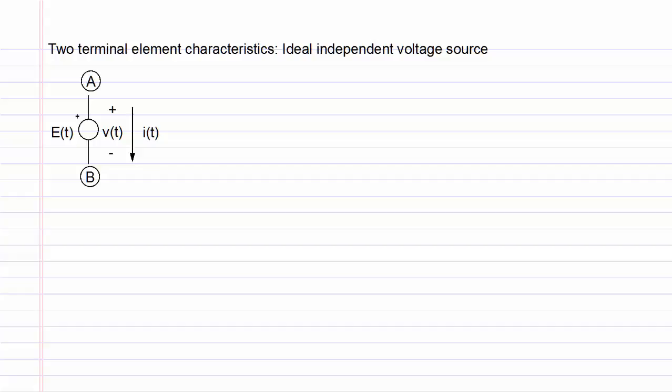Once the voltage direction is specified, the current will flow from the positive towards the negative end of the voltage, as shown on screen. The value of the source, E of t, may be equal to, for example, 5 volts, in which case E of t is also equal to V of t. The main characteristic of an independent voltage source is that the value of E of t is specified and given. The current I of t that flows through the source can have any value, and it depends on what else is connected to the source.